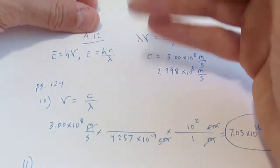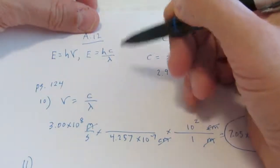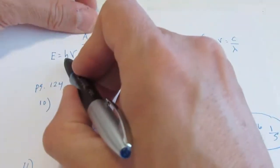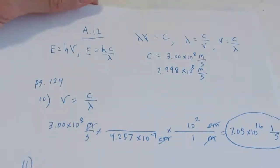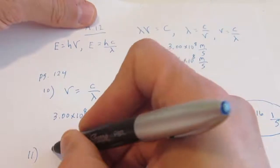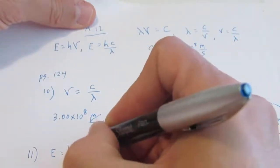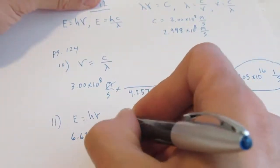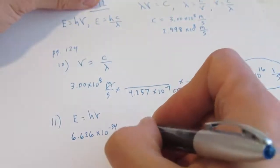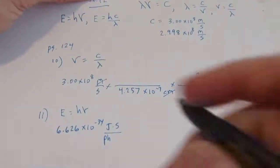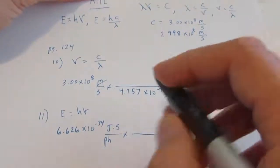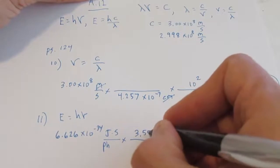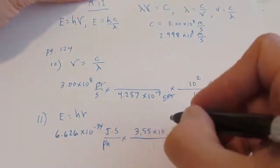H is a constant called Planck's constant, depending upon who your teacher is, and C is the velocity of light. So these two are constants in this equation. Let's take a look at number eleven. I want to find the energy and I give you the frequency. So we're going to go: energy equals h times the frequency. Planck's constant is 6.626 times 10 to the negative thirty-fourth joule seconds per photon of light. We're going to multiply that by the frequency given, which is 3.55 times 10 to the seventeenth hertz.